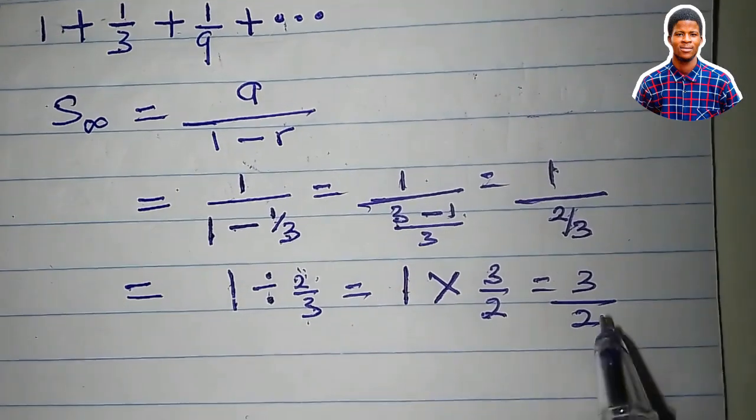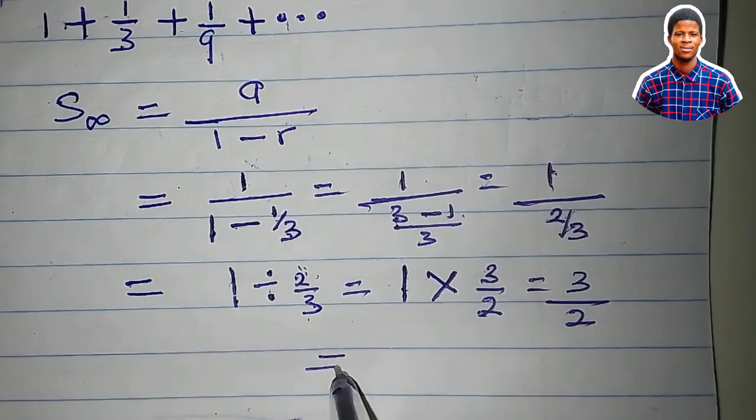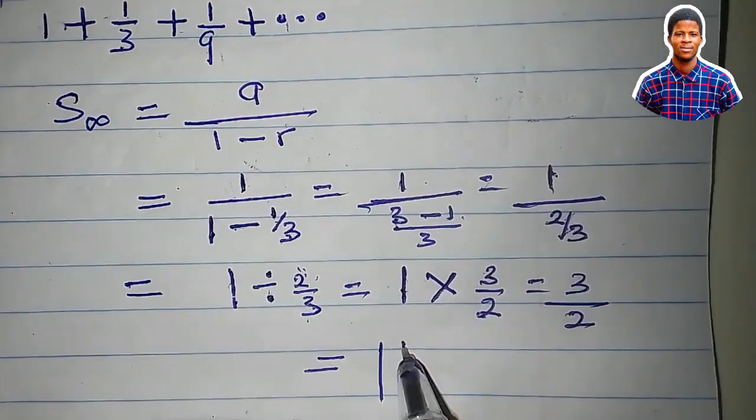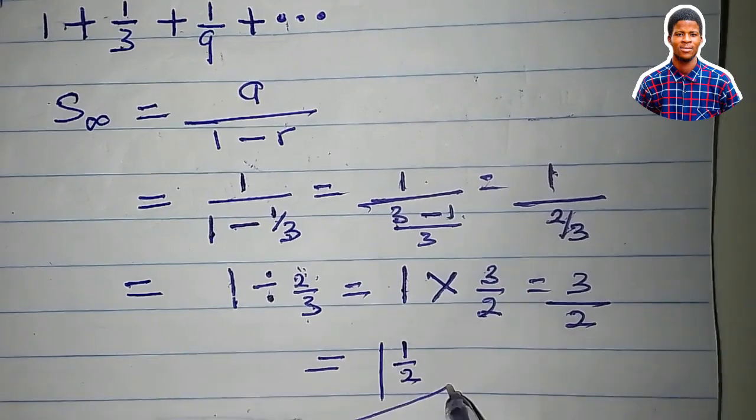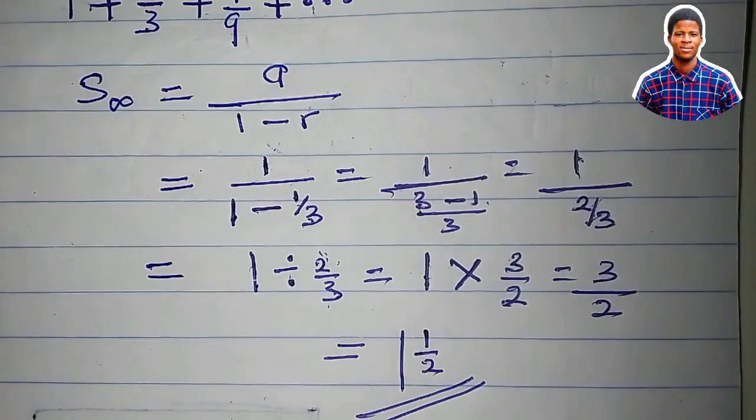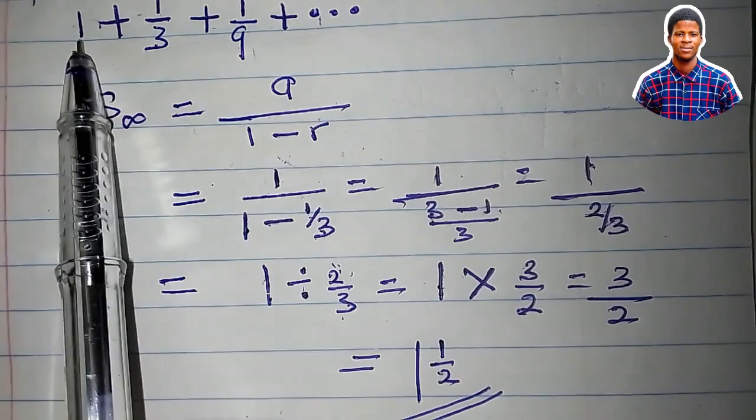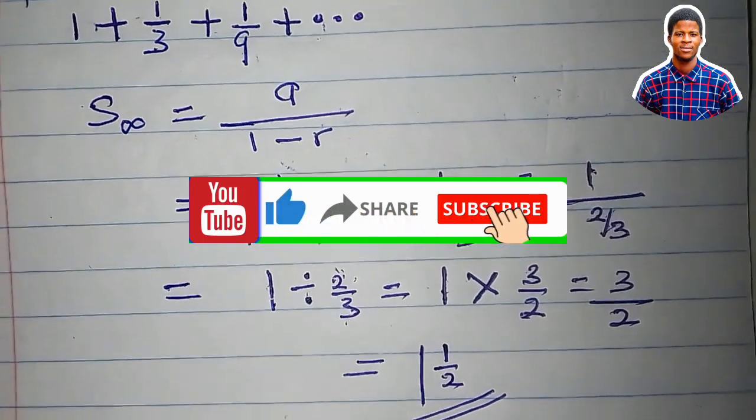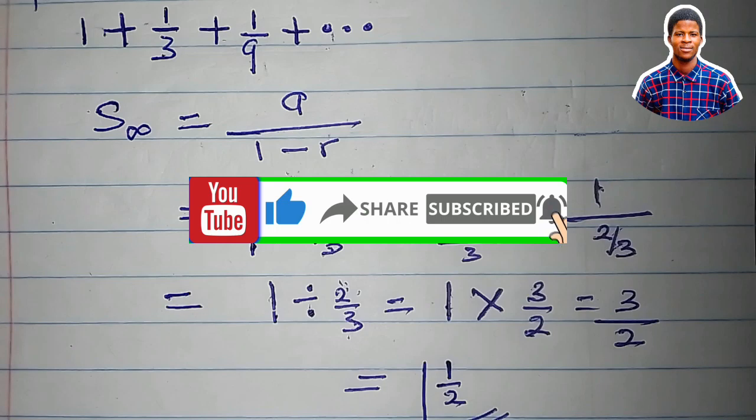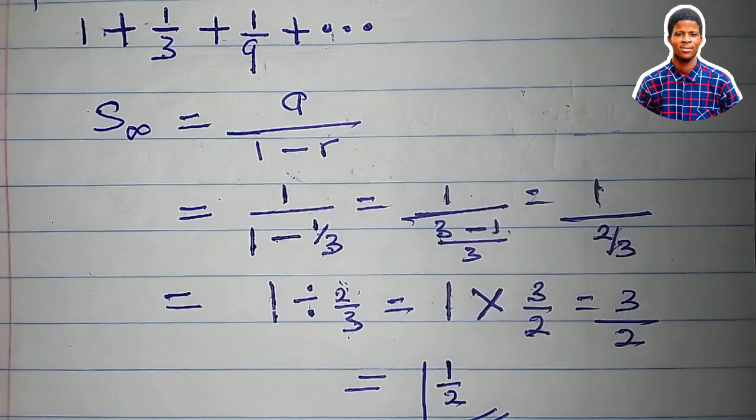So breaking that down to the lowest we have 1 whole number 1 upon 2. This is the sum to infinity of this very geometric series. It's as simple as this. I hope you get the point, keep watching. I'll see you in the next one.